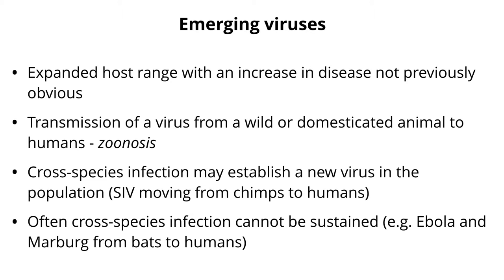SIV, simian immunodeficiency virus, went from chimps to humans around 1920 and remained in humans — it is now a human virus. HIV at one time was a zoonotic infection, but it is no longer. It's considered a human virus because it has established a reservoir in people and passes from person to person.